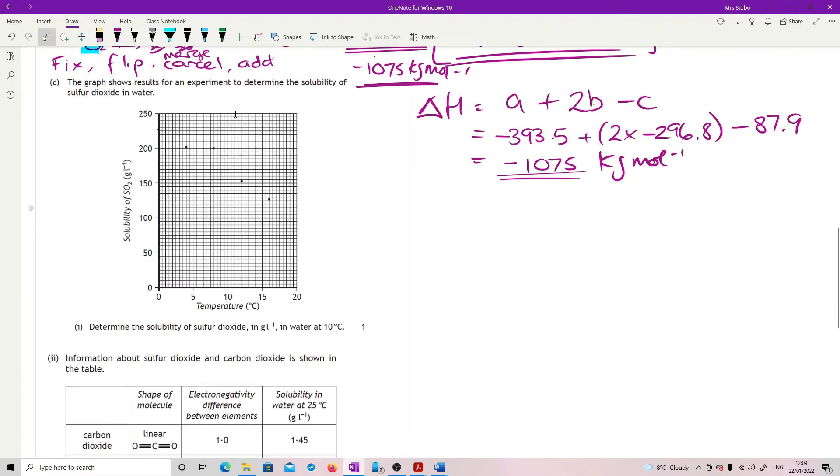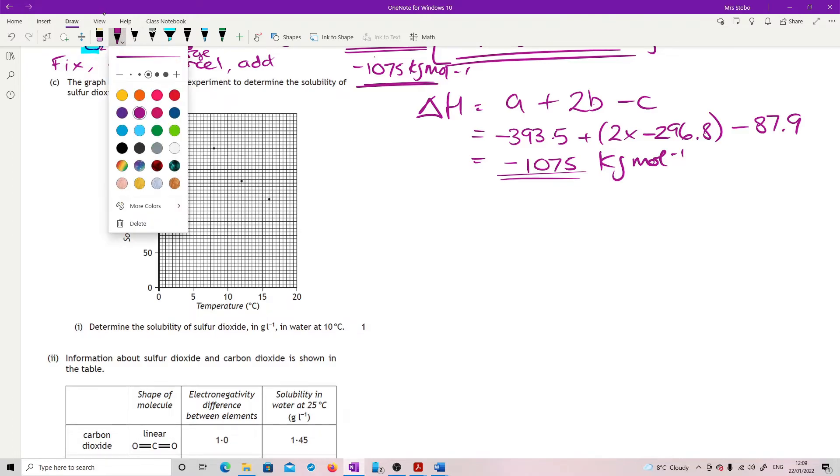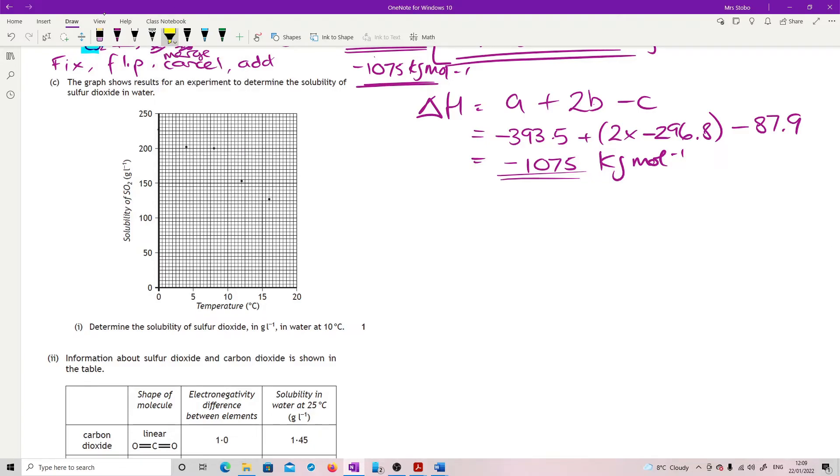The graph shows results for an experiment to determine the solubility of sulfur dioxide in water. Determine the solubility of sulfur dioxide in grams per litre in water at 10 degrees C. So this is the second time this has come up. It's this idea of recognizing that we don't have a perfect graph and that you end up with some plot points sometimes out of sync. So if I take my line of best fit, I'm going to take it through these points here. And we're going to end up with this one just being off the side of the line, an outlier from the line. So if you're then asked to do 10 degrees C, what you're looking for is where it crosses this line. When I read this more carefully, when I did my line up, I got it at 165 grams per litre. The mark scheme said anywhere between 163 and 167. So I was happy.